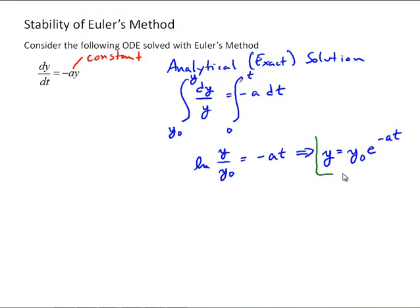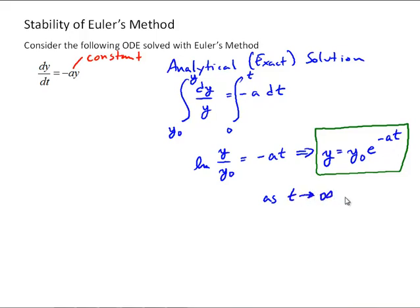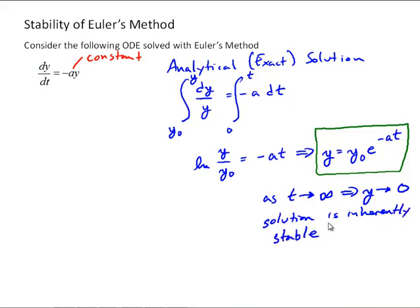That's our exact solution — a decaying exponential function. As t goes to infinity, y should go to 0. So as far as the differential equation itself, the solution is inherently stable, since we would expect the errors not to grow in an unbounded fashion if the solution itself is heading towards 0.